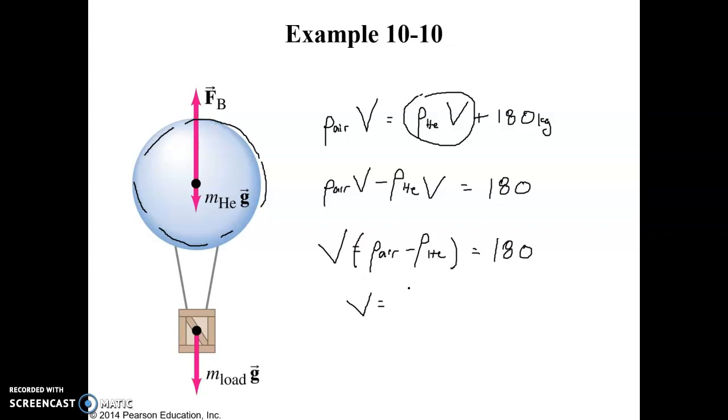And so, the volume is going to equal 180. Then, we'll divide what's in the parentheses over here to the other side to get density of air minus density of helium in the denominator. So, the volume is going to be equal to 180 divided by 1.29 minus 0.179 and that equals 160 cubic meters. So, that's how big the balloon would need to be in order to lift it and the 180 kilogram load off of the ground.